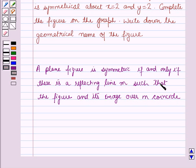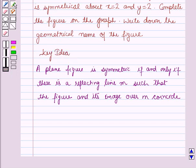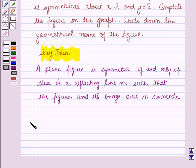Now this result will work as a key idea for solving this question. And now, we will start with the solution. Firstly, we have to plot the points A(3,2) and B(2,4) in the graph.